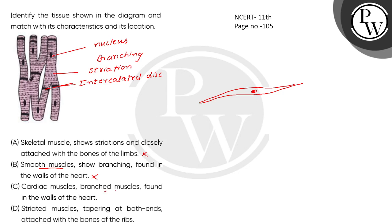Cardiac muscles - branched muscles found in the wall of the heart. This is very correct. This is a cardiac muscle which is given here. Cardiac muscle, why is it? Branching, striation, nucleus - and where is it?